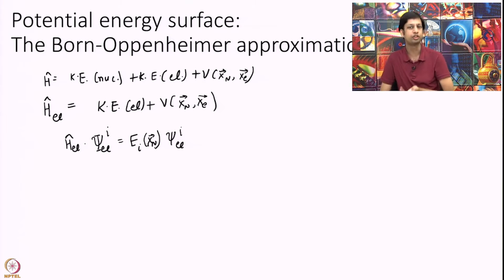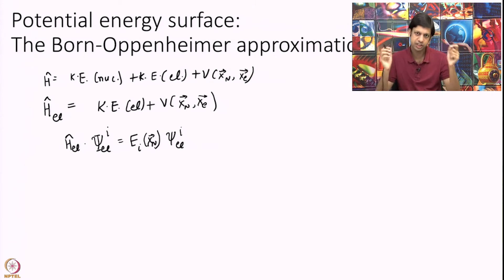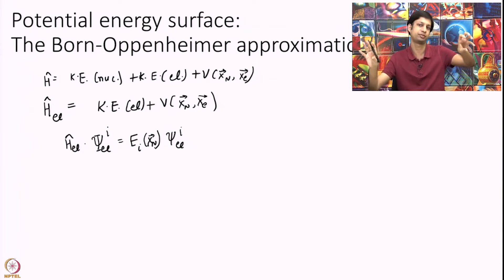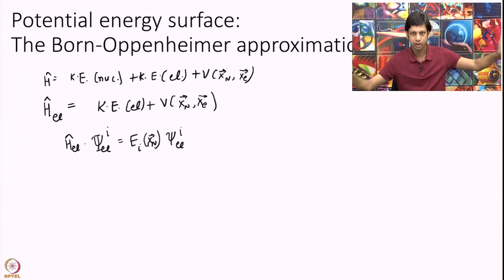This is called electronic structure theory - solving this equation. The energy I get depends on the HF distance, on the H and F positions. If I change this position, my potential energy will change. How the electrons interact with H and F will be different depending on exactly where H and F are located.